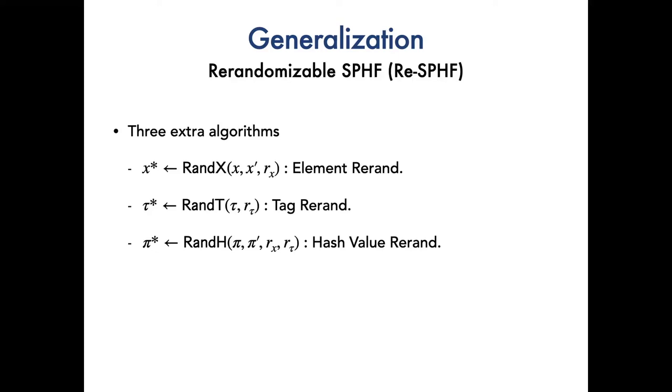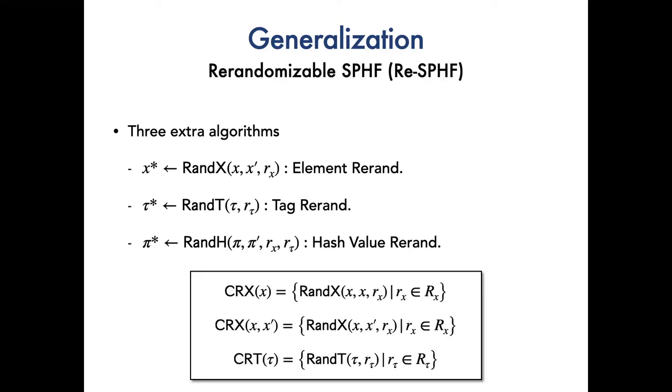Motivated by those observations, we put forward the notion of randomizable SPHF, which is a regular SPHF augmented with self and pairwise randomizability. Based on the typical definition of SPHF, we formalize three extra algorithms, namely RAND_x, RAND_t and RAND_h to capture both cases of randomization. Let CRx_x denote the set of all randomization of x obtained via RAND_x. Let CRx_x,x' denote the set of all randomization of x obtained via RAND_x with x', and CRt_tau denotes the set of all randomization of tau obtained via RAND_t.